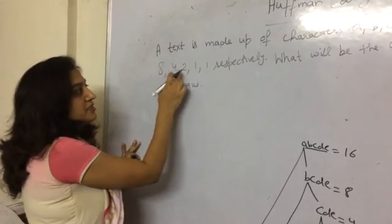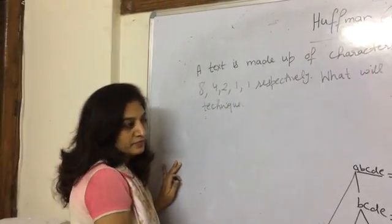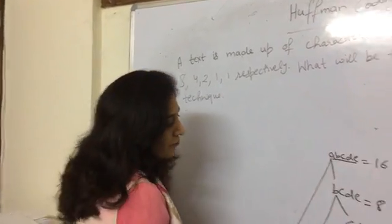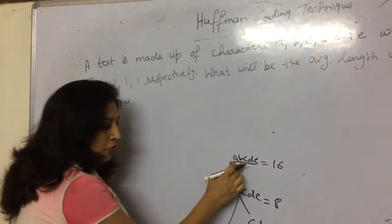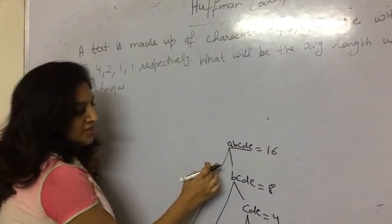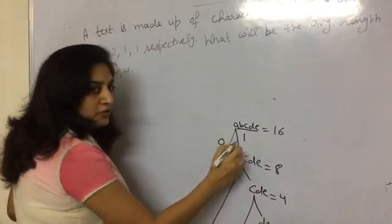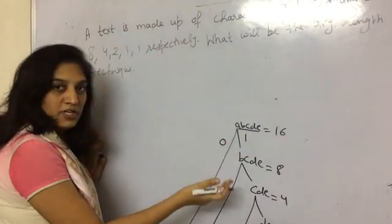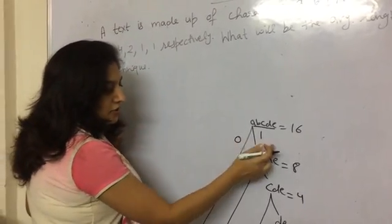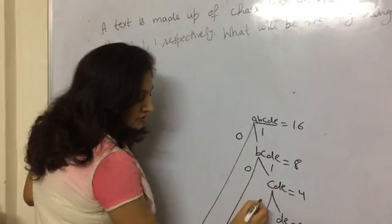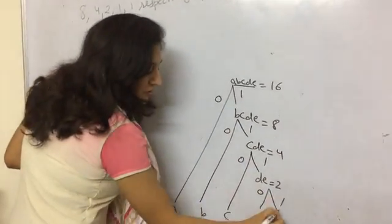If we sum up all the frequencies it will give you 16. After that, you will start from the top and assign 0 to the left path and 1 to the right path. Like here: 0 and 1, 0 and 1, 0 and 1, 0 and 1.